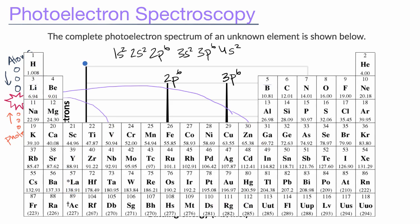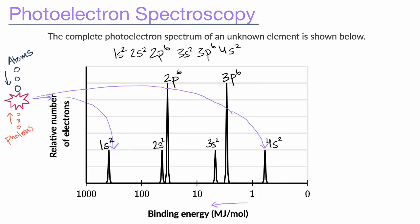And we can see, let's see, 1s2 gets us to helium. Then you have 2s2, 2p6 gets us to neon. 3s2, 3p6 gets us to argon. And then 4s2 gets us to calcium. So our mystery element is calcium.